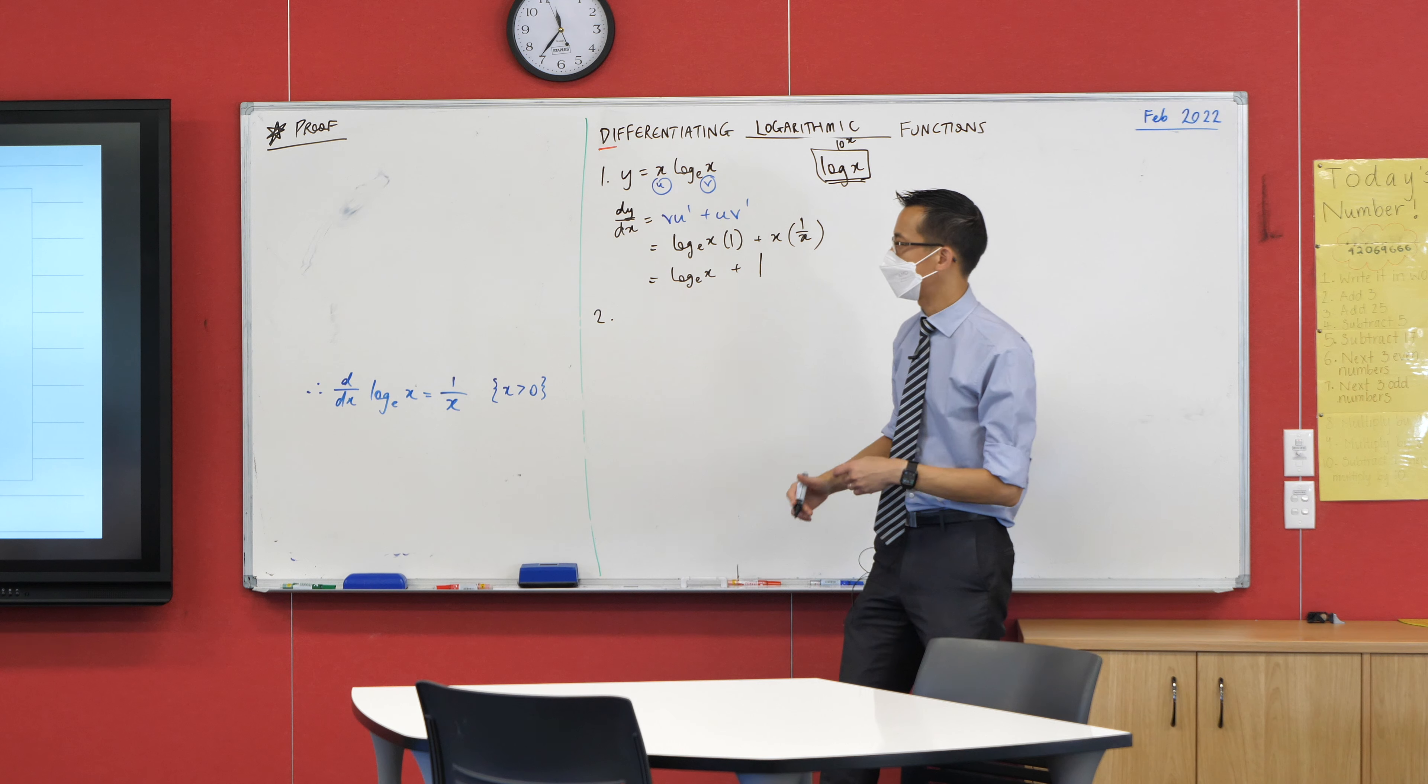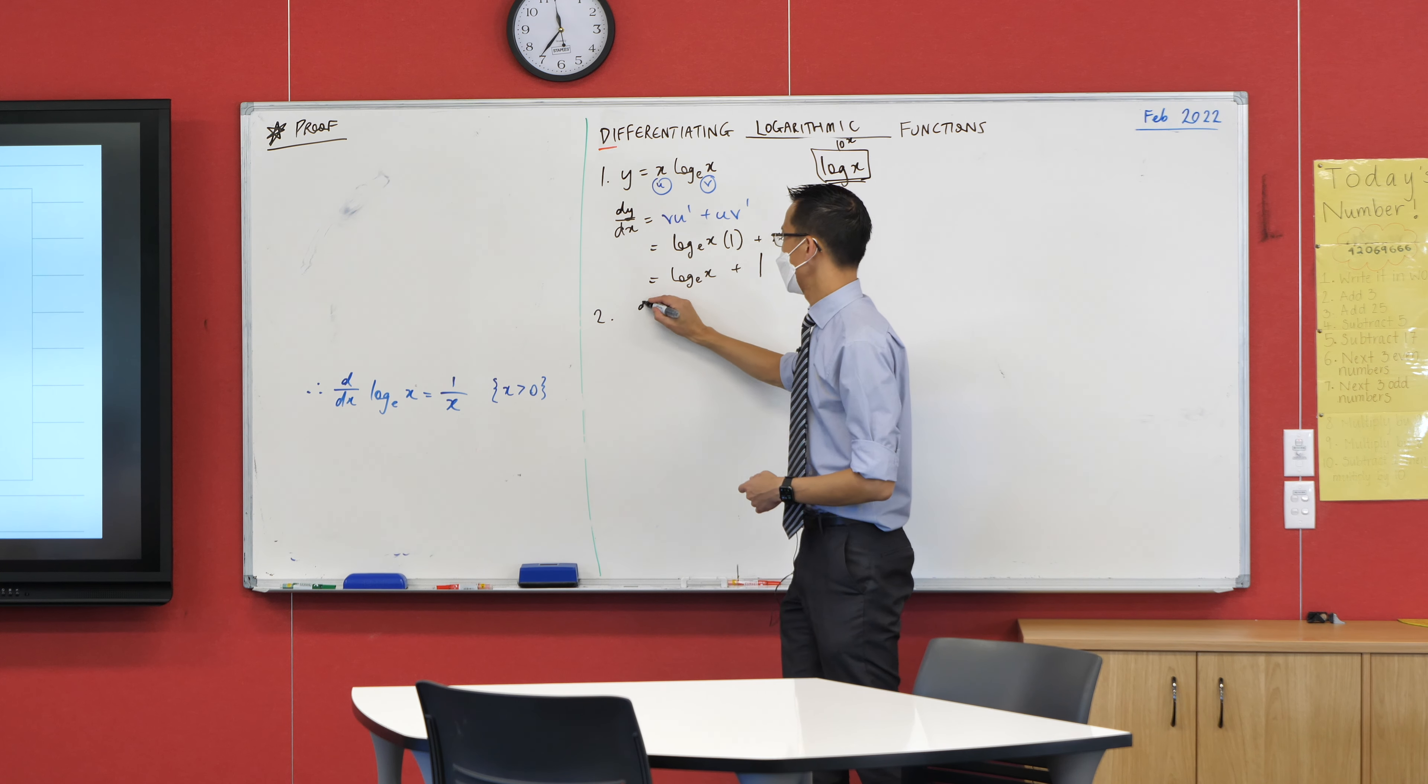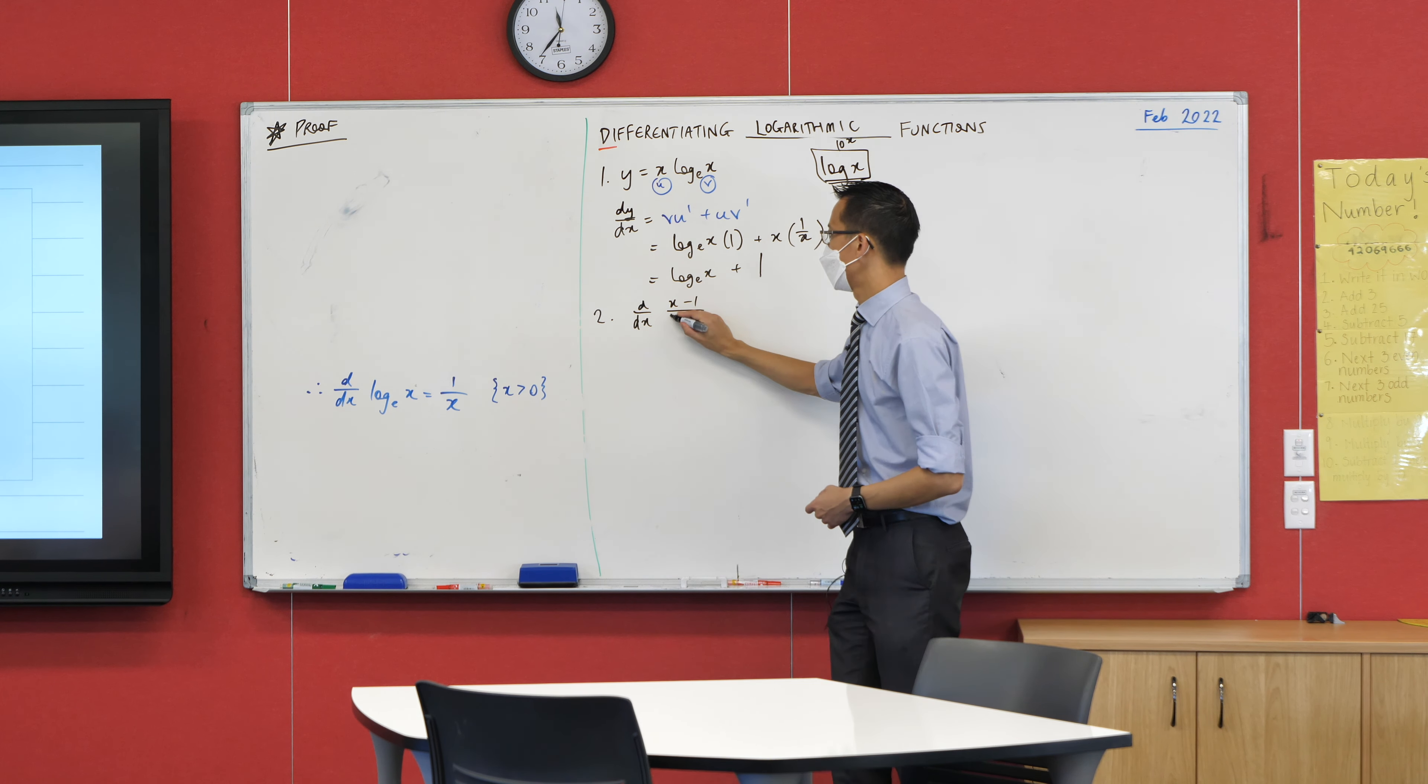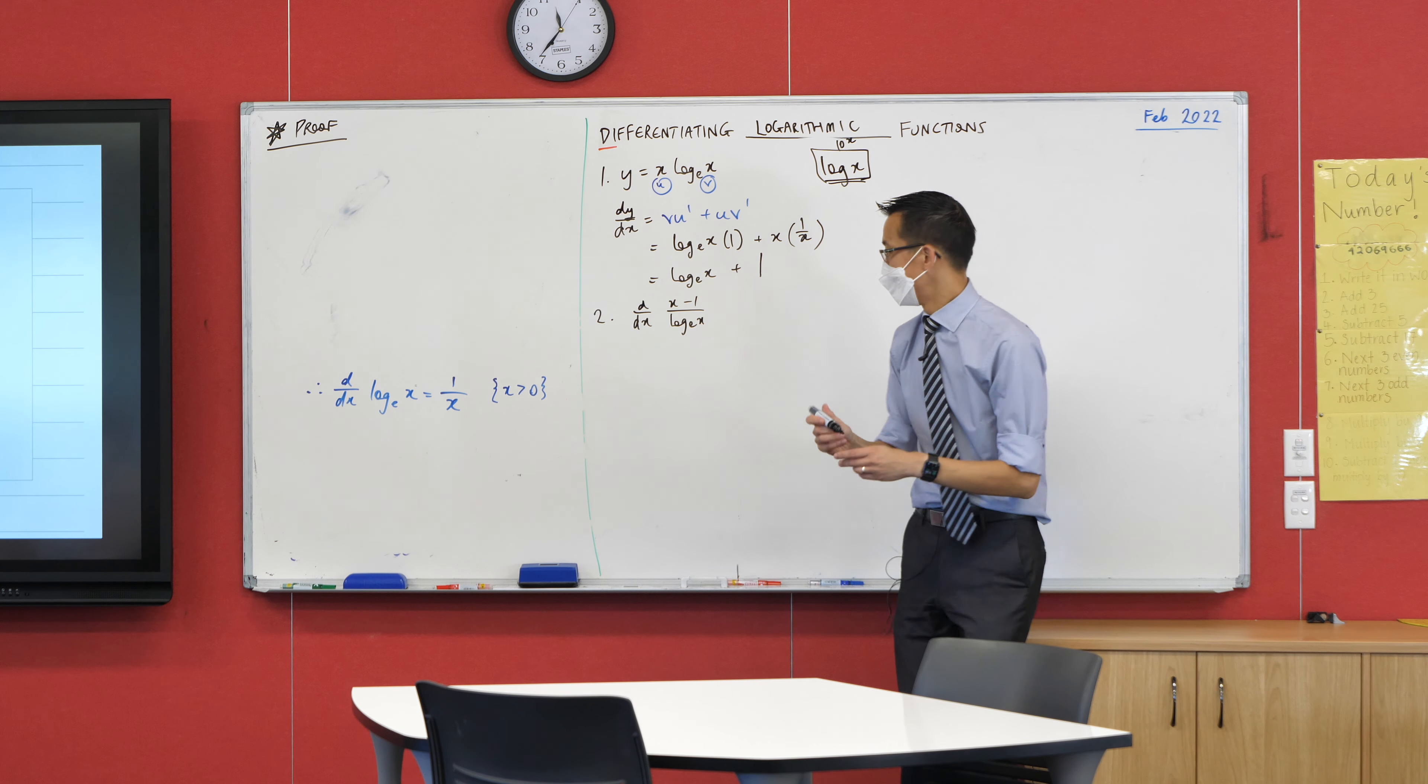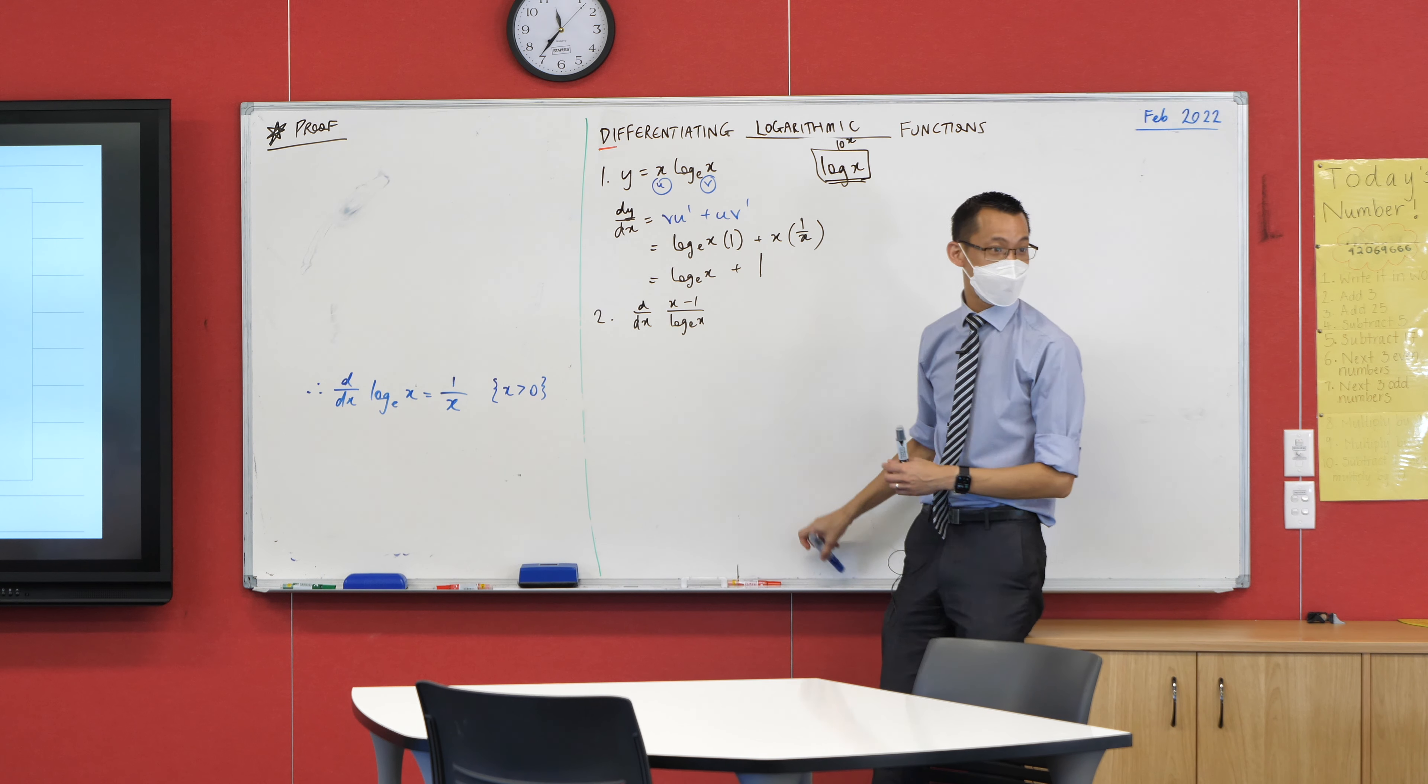All right. Let's have a look at the next one. Quotient rule is always a little bit trickier, but what we're differentiating is X minus one on log X. So, just like before, I'm going to set my U and my V.